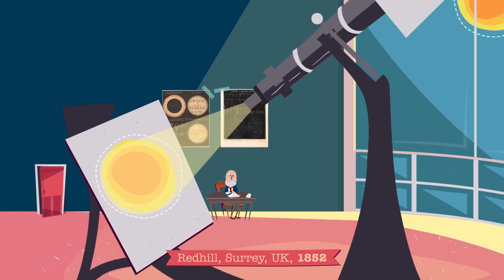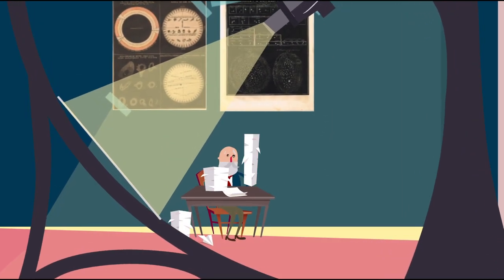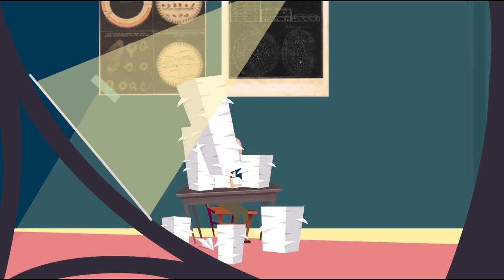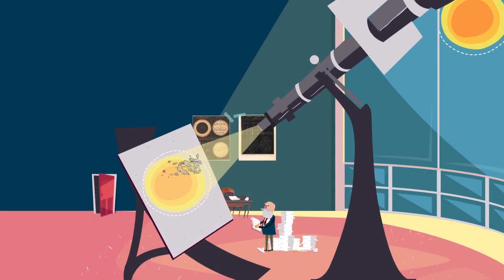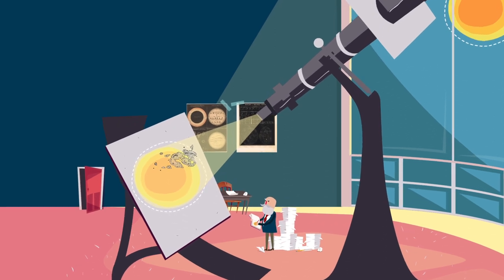With that telescope, Carrington made more than 5,000 observations of sunspots over seven and a half years. And then, on the 1st of September, 1859, something unusual happened.